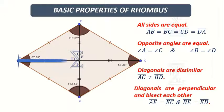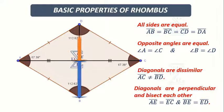The diagonals are perpendicular and bisect each other. That is, the line segment AE is equal to the line segment EC, and the line segment BE is equal to the line segment ED.